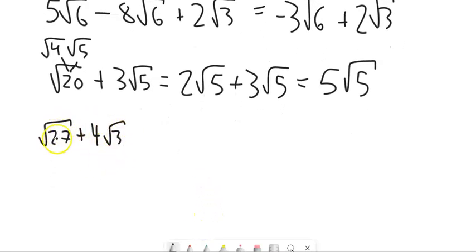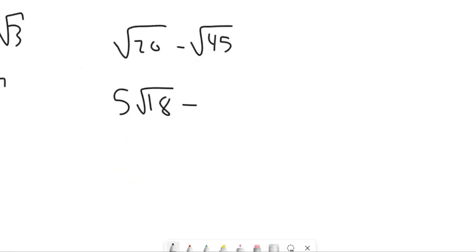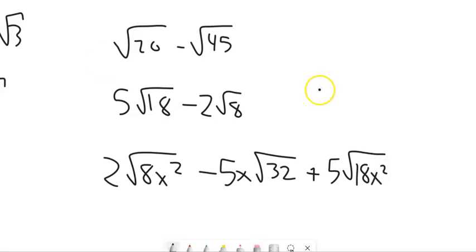This one looks similar. Looking at it first, it looks like I can't combine anything. But √3, I can't simplify. But this, this is 9 times 3. And the √9 is 3. So this is 3√3 plus 4√3. 3 of them plus 4 of them is 7 of them.